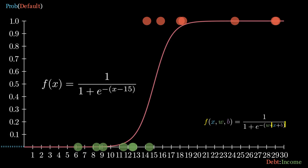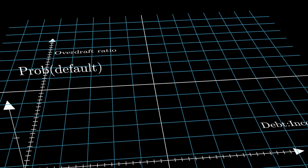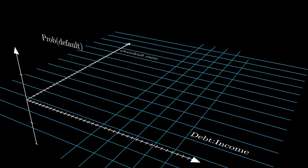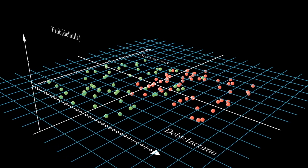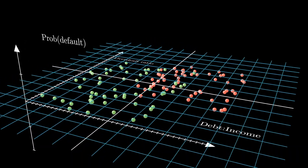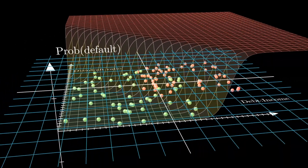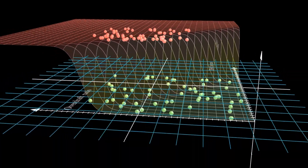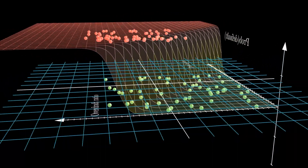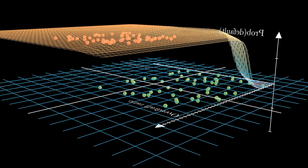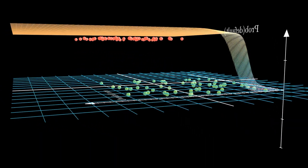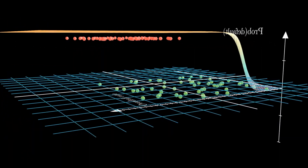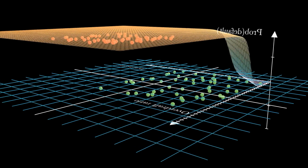The weights tell you the relative importance of each input in pushing the probability of the default class towards 1. Logistic regression is like a loan approval system — it considers various input features of the loan application such as debt to income, overdraft ratio, and repayment frequency, and weights them by importance. As with linear regression, the algorithm easily copes with multiple parameters.